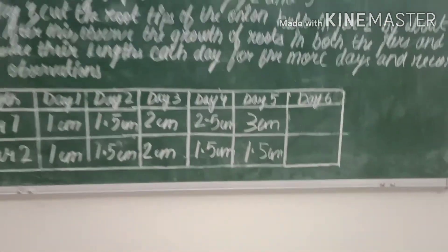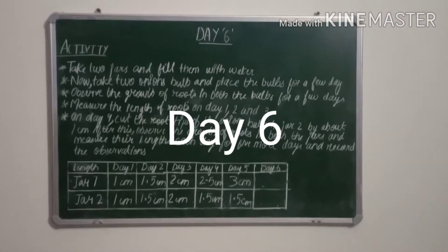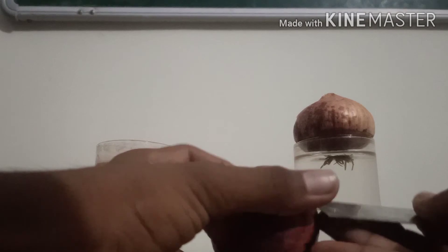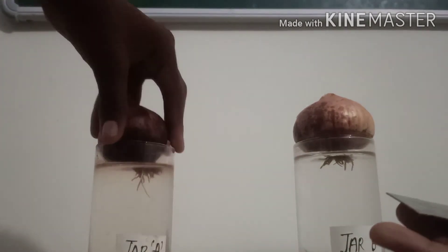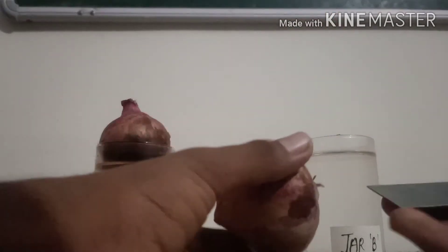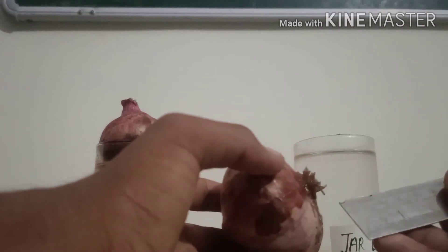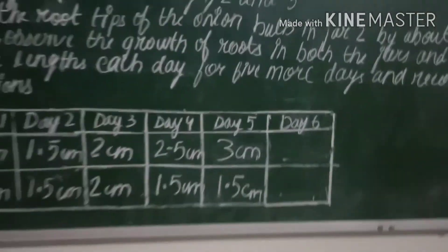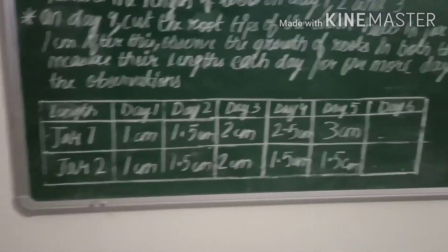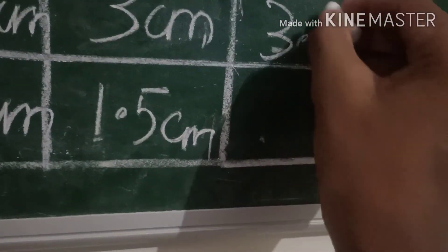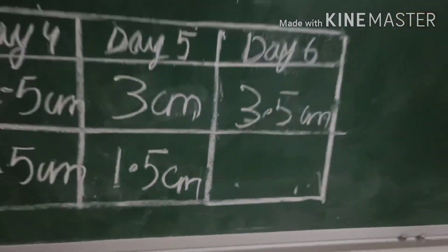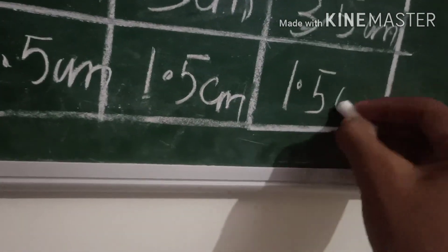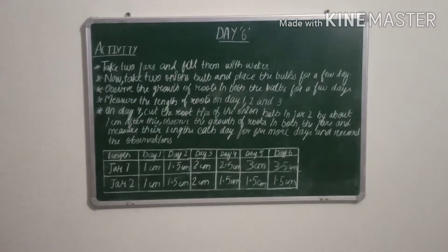Hello everyone, this is day six and now we are going to measure the length of the roots. In jar one it is about 3.5 centimeters. In jar two there is no growth because we cut its roots by one centimeter. So in jar one we get 3.5 centimeters and in jar two we get the same position as 1.5 centimeters. Thank you, and this activity has been completed.